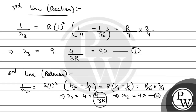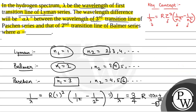From equations 2 and 3, a·λ = λ₃ − λ₂ = 9λ − 4λ = 5λ. Therefore, a is equal to 5. The final answer is a = 5.